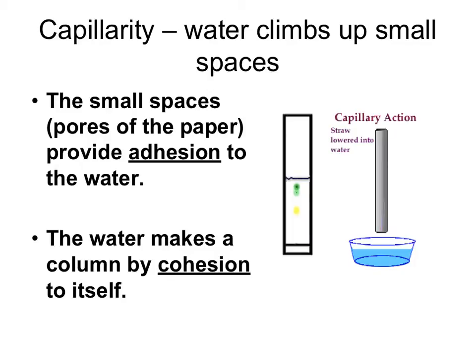Capillary action, due to adhesion and cohesion, is also the force that allows trees to take water from the soil and transport it against gravity all the way up to the leaves, which need the water for photosynthesis.